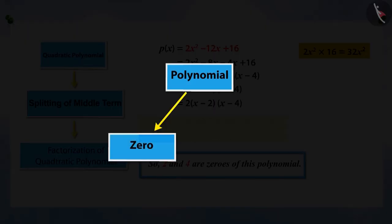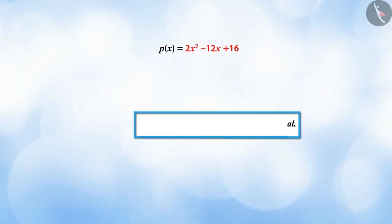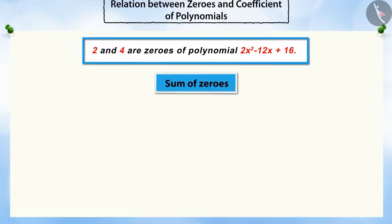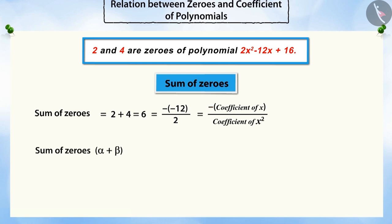Do you know that the zeros of a polynomial and its coefficients are related to each other? Let's see how. If we add the zeros, you will see that the sum of the zeros is equal to the negative ratio of the coefficient of X to the coefficient of X squared of the quadratic polynomial.